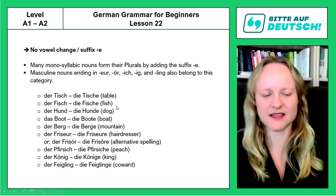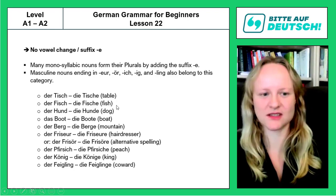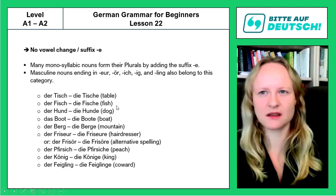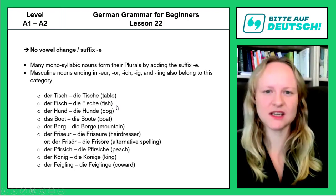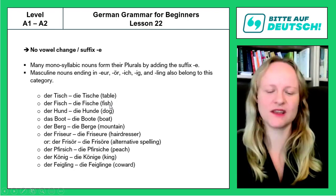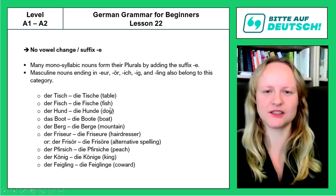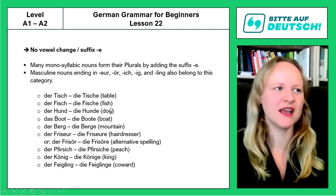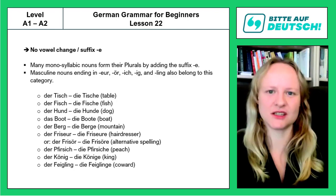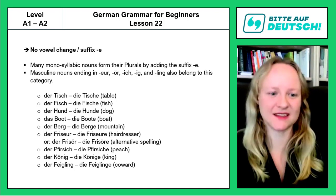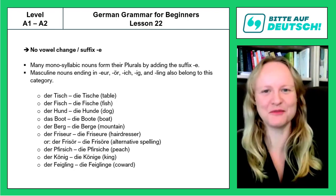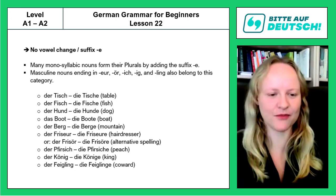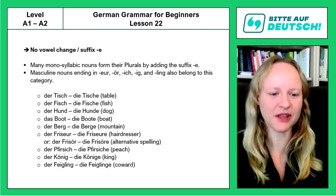Interestingly, fish in English is a noun that is considered uncountable — one fish, two fish. Do you say two fishes? I think fish is not supposed to be countable in English, just like sheep: one sheep, two sheep. It is countable, but it also doesn't change the form.